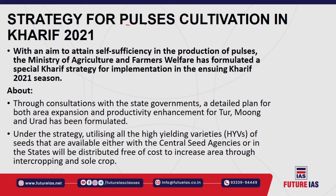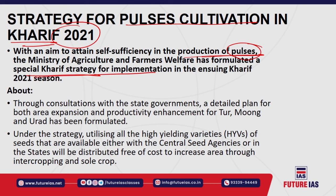The strategy for pulses cultivation in Kharif 2021: The Ministry of Agriculture and Farmers Welfare has formulated a special Kharif strategy for enhancing productivity and production of Kharif crops, specifically pulses — Tur, Moong, and Urad — applicable for Kharif season 2021. The Kharif season basically starts in June and ends in October. Kharif crops are sown at the beginning of the southwestern monsoon rains and harvested at the end of the southwestern monsoon.